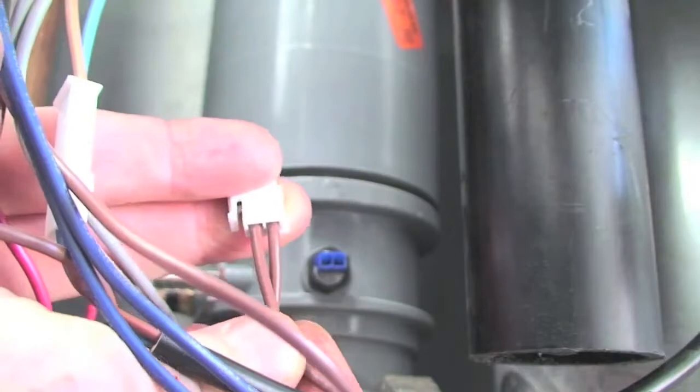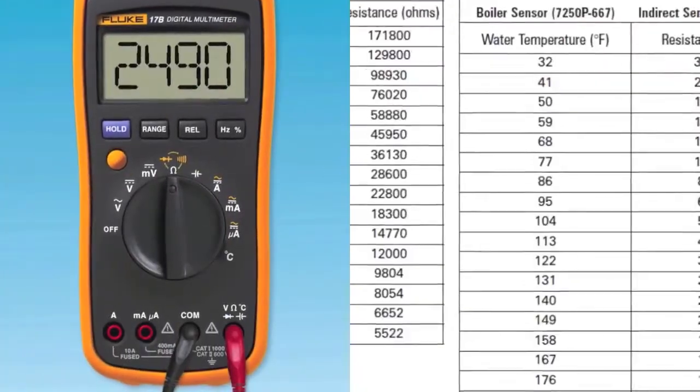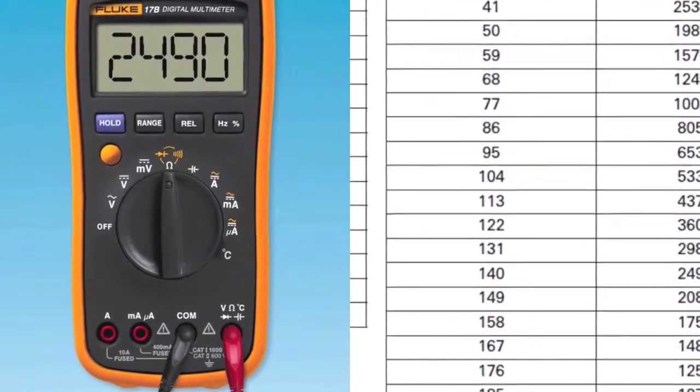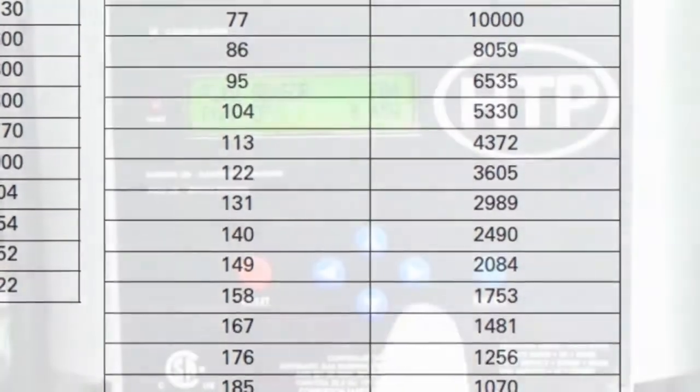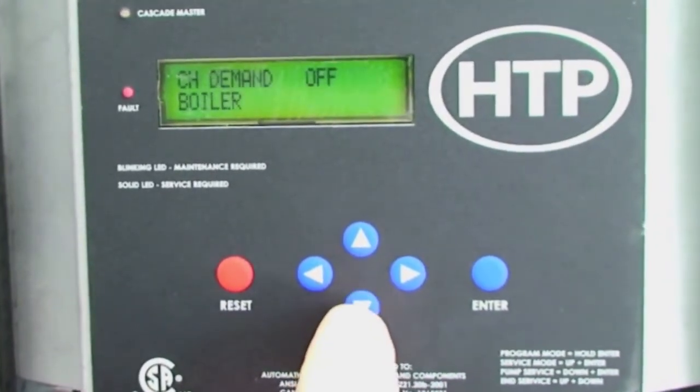Measure the resistance of the sensor and refer to the chart within the manual. The temperature on the chart should be close to the same as the temperature in the flue. Note, this can also be checked on the display through the system parameters.